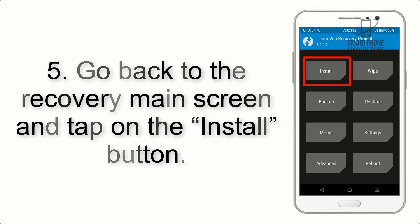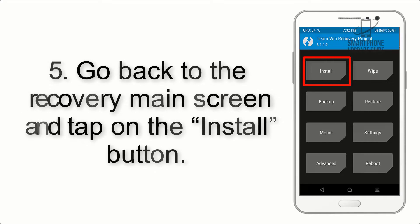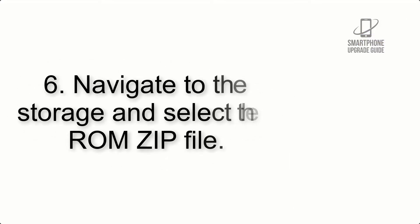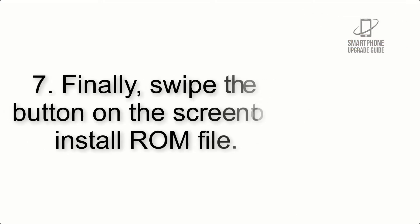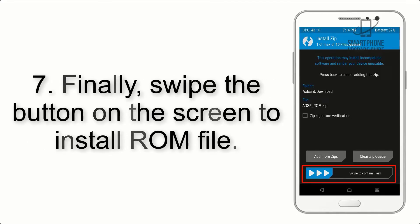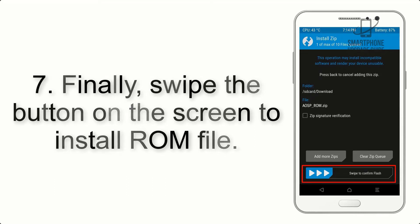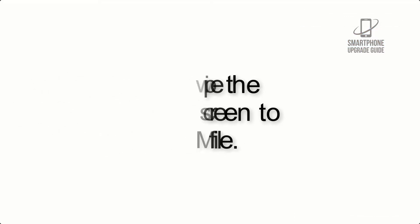Step 5: Go back to the recovery main screen and tap on the Install button. Step 6: Navigate to the storage and select the ROM zip file. Step 7: Finally, swipe the button on the screen to install the ROM file.